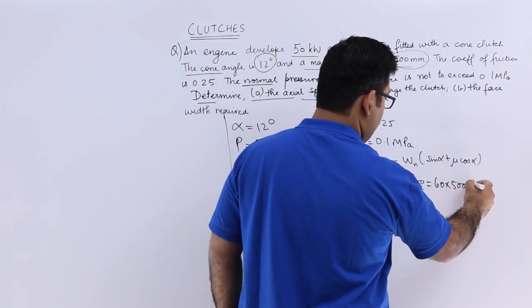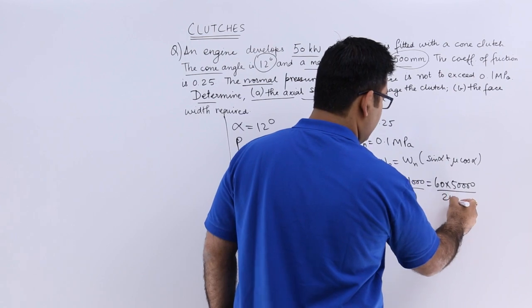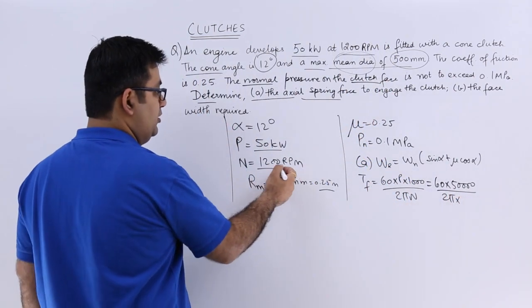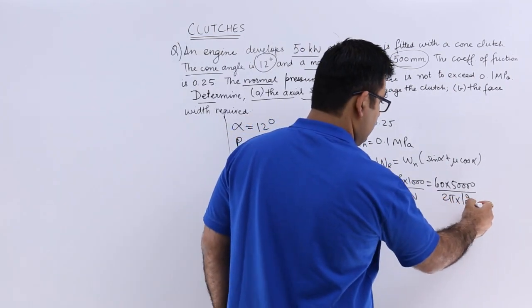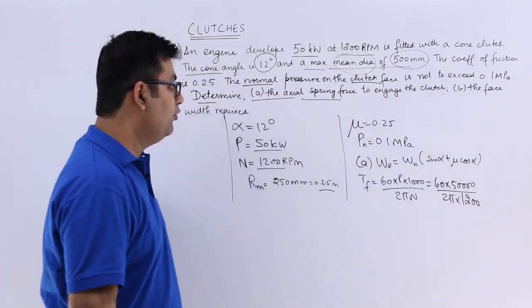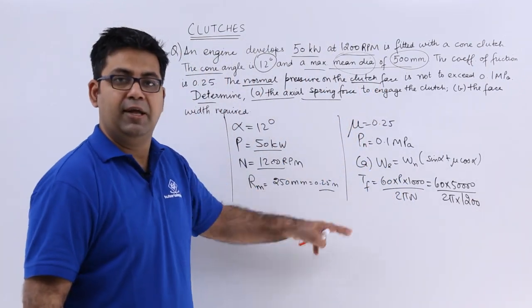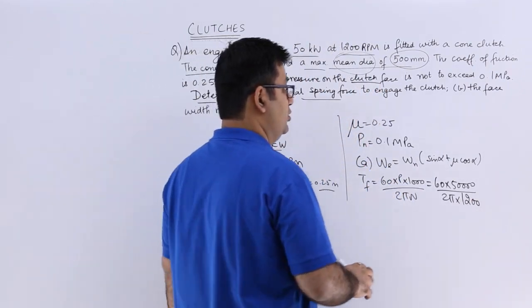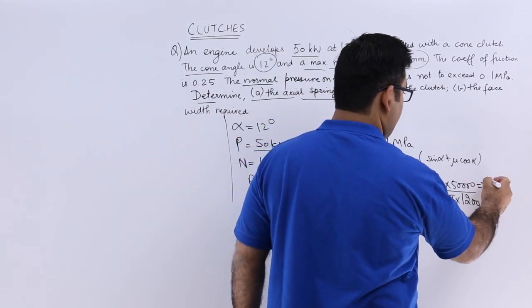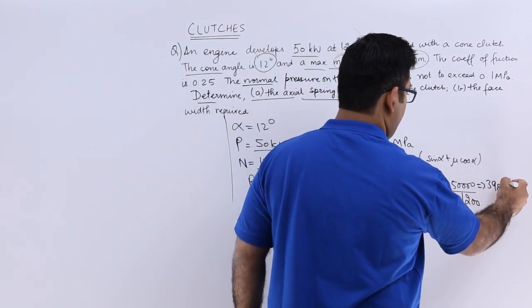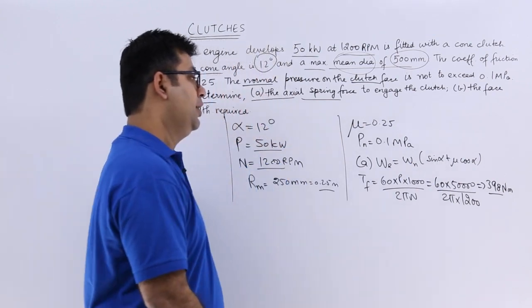So you will have 50,000 by 2 pi into N is how much? 1200. So this would give you your frictional torque in Nm. So this would be 398 Nm.